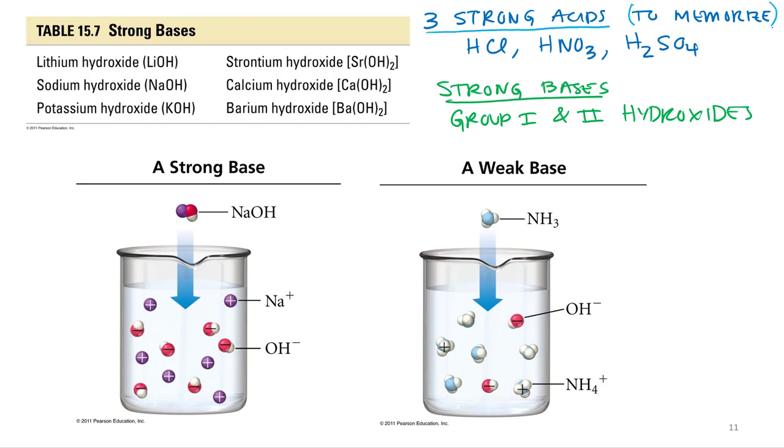And then group 1 and group 2 hydroxides. Primarily, what we generally use in the lab is group 1 hydroxides, particularly sodium and potassium hydroxide, and you've used those plenty in the lab already.